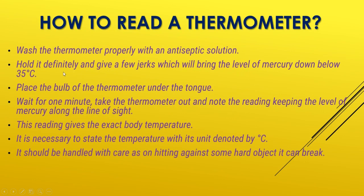How to read a thermometer: First, wash the thermometer properly with antiseptic solution. Hold it firmly and give a few jerks to bring the level of mercury down below 35 degrees Celsius. Then place the bulb of the thermometer under the tongue or in the underarm. Wait for one minute, then take the thermometer out and note the reading, keeping the level of mercury along the line of sight.